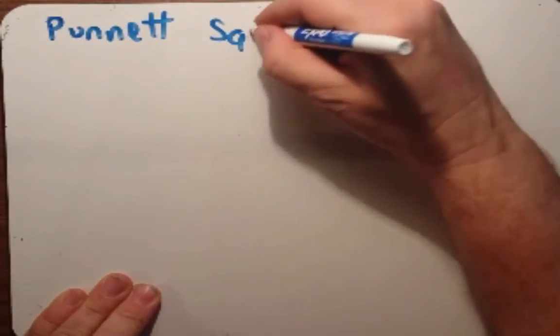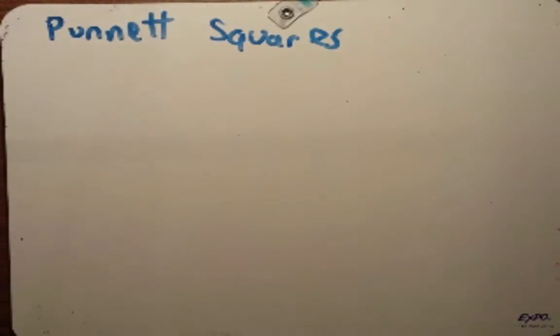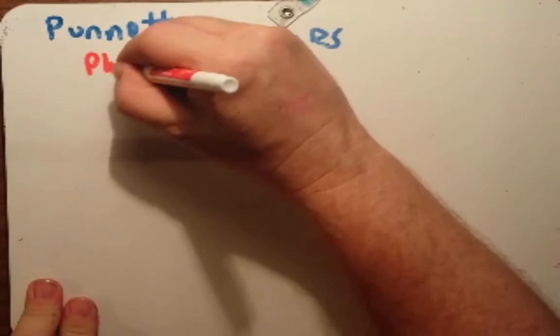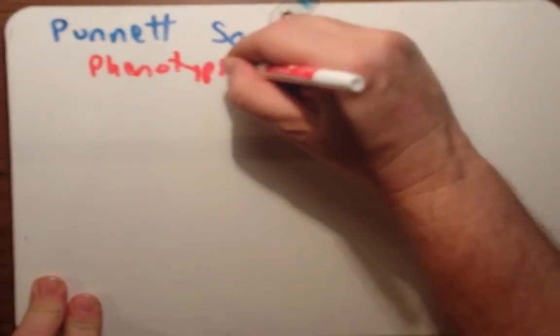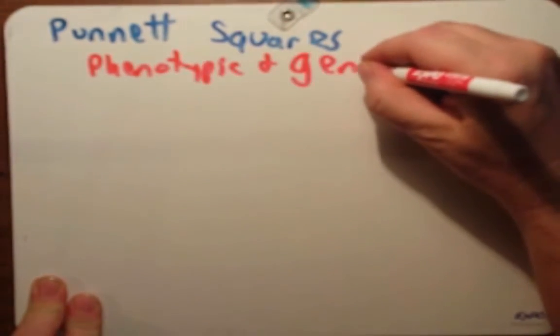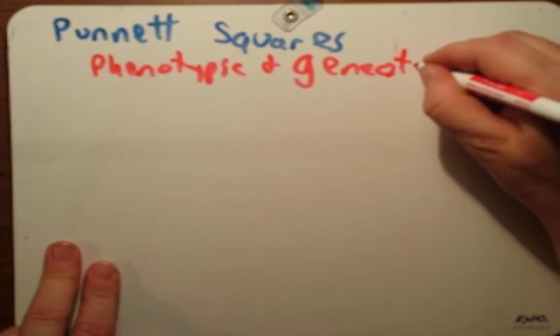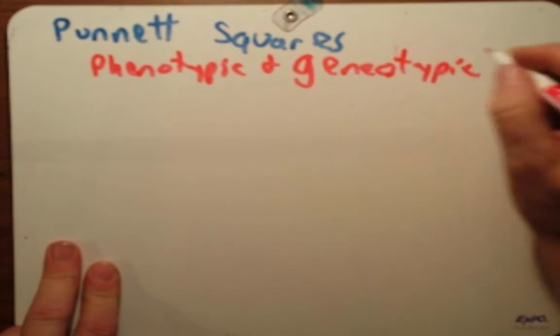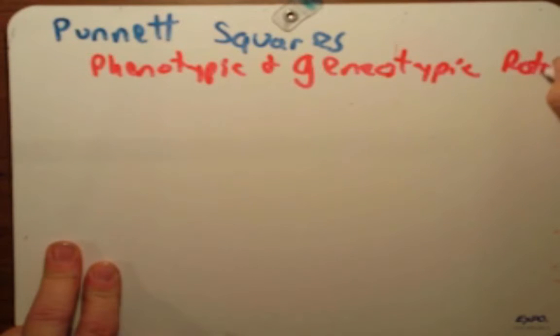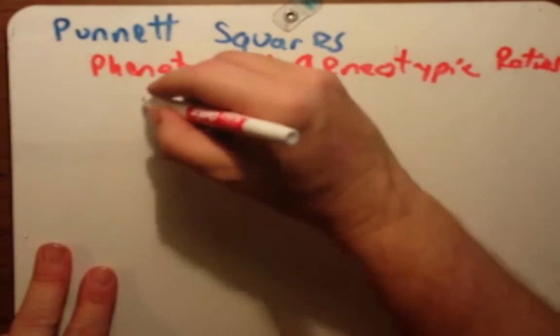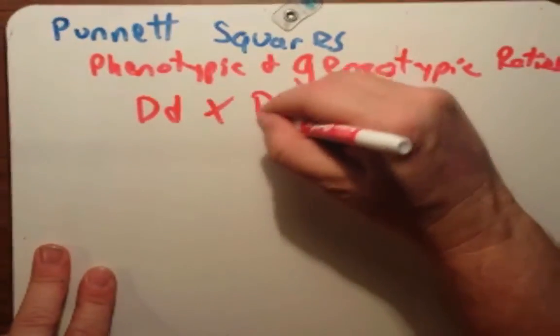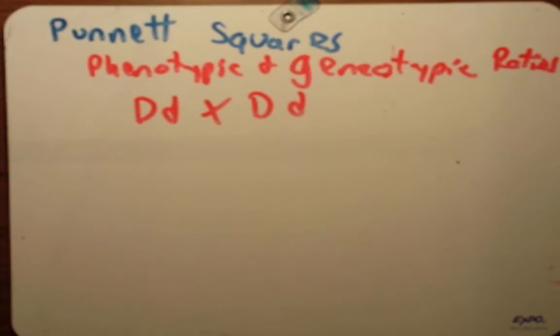Let's talk about Punnett squares. You've probably seen these before, but let's still walk through them. Let's say we're given a problem and we're asked to predict the phenotypic and genotypic ratios in the following cross: big D, little d times big D, little d.